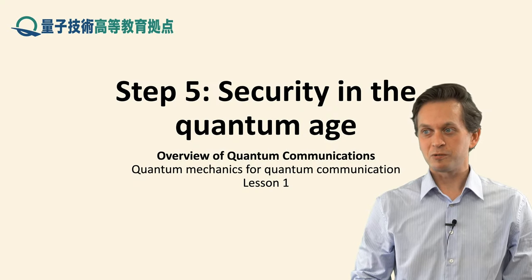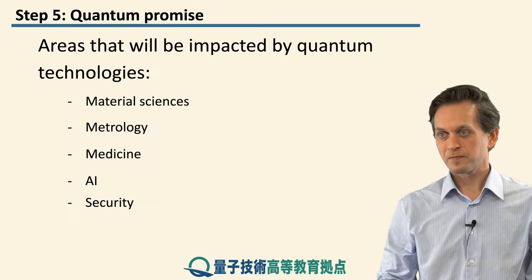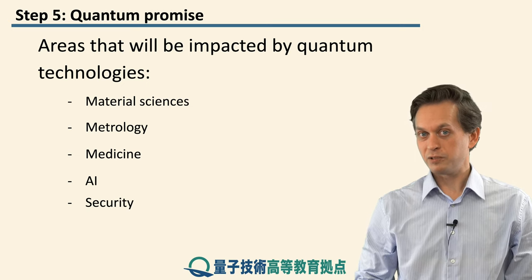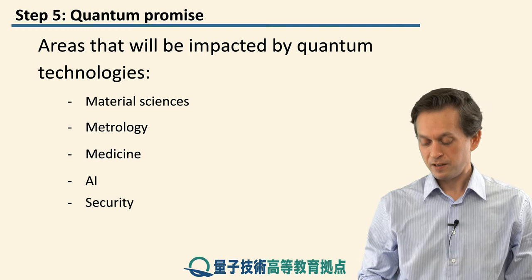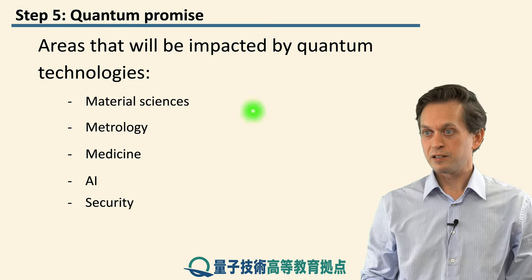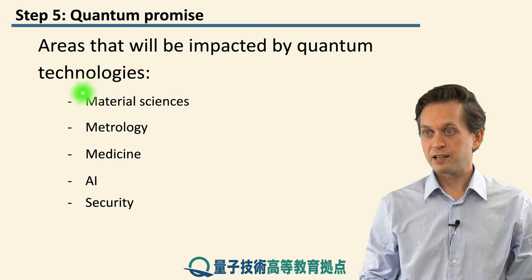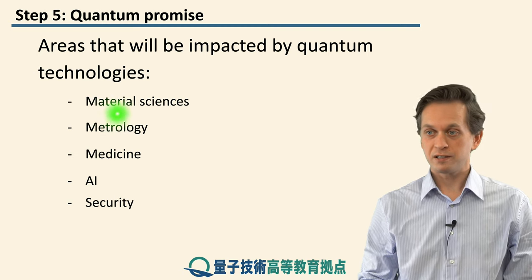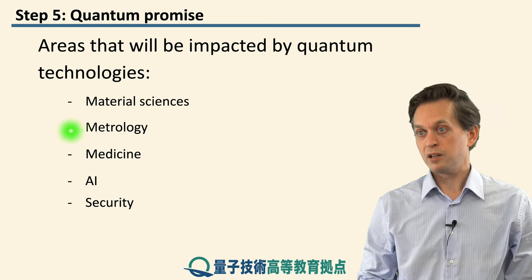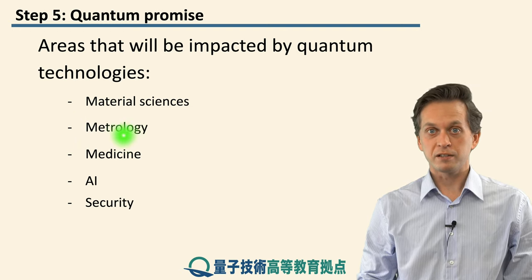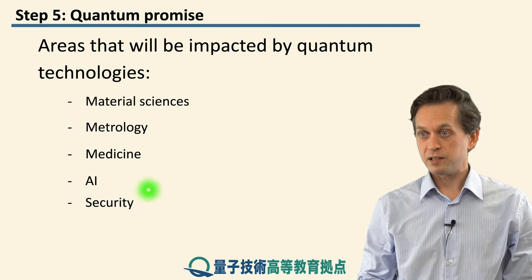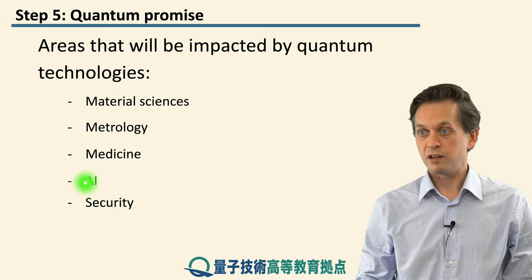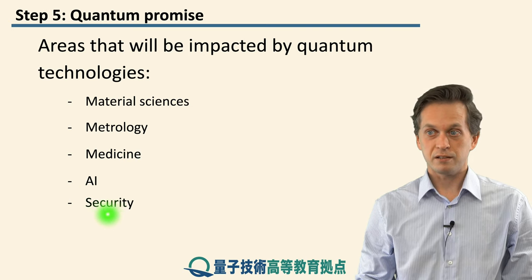Step 5: Security in the quantum age. Let's have a look at what areas quantum technologies are promising to impact. In particular, there is great potential for material sciences, where quantum technologies will be able to research new materials with new properties. In metrology, measurements will be done to a higher degree of sensitivity and accuracy. In medicine, new drugs will be researched using quantum technologies. In artificial intelligence and in security.